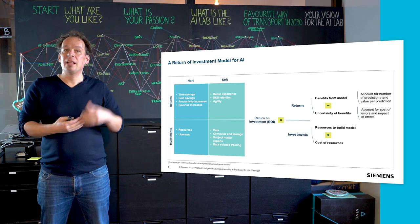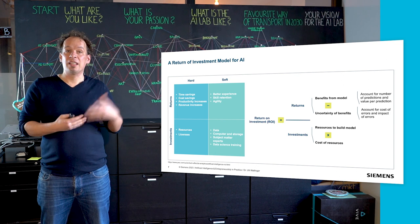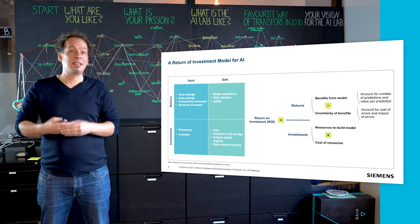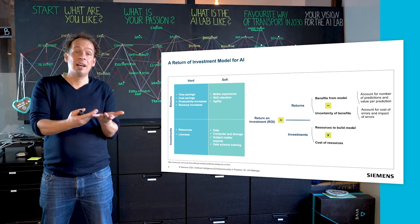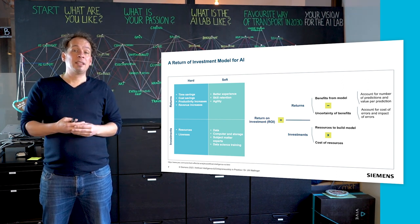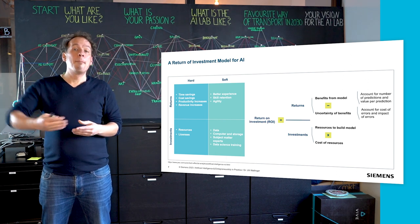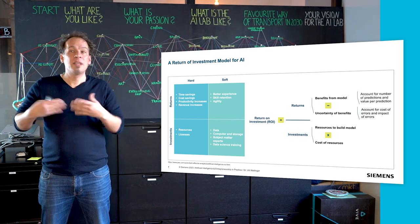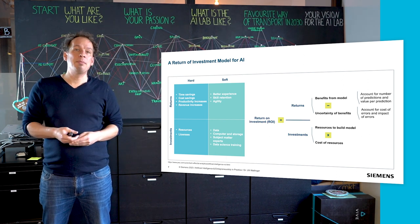Hard factors in returns are typically time saving, cost saving, productivity increases, or revenue increases. Hard factors on the investment side are obviously resources and licenses. The soft factors on the returns side are better experiences, better skill retention, agility, and so on. On the investment side we need data, compute, subject matter experts, and AI and data science capabilities. All of this can be accumulated to pull together investments — the resources to build a model multiplied by the cost of resources — contrasted against the benefits of the model minus the uncertainty of those benefits. There are some kinds of cost of error and impact of errors to be calculated. This formula gives you a good indication of value per prediction, as you have it in the ads business.